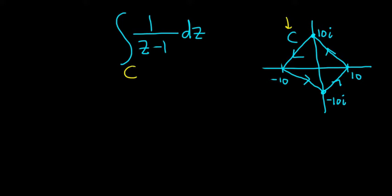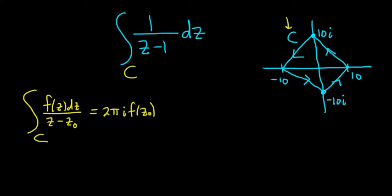To do this problem, we're going to use Cauchy's Integral Formula. Cauchy's Integral Formula says if you have the integral of a contour of f(z) dz over z minus z naught, and here C is a simply closed contour taken in the positive sense, this is equal to 2πi f(z naught). This is provided that z naught is an interior point to your contour and f is analytic inside and on the contour.